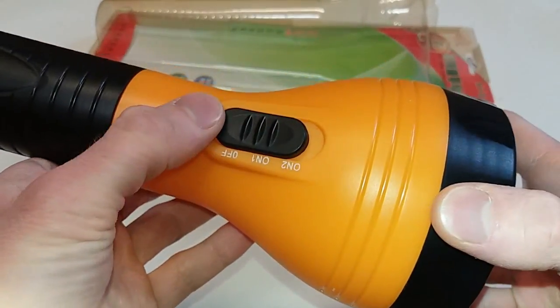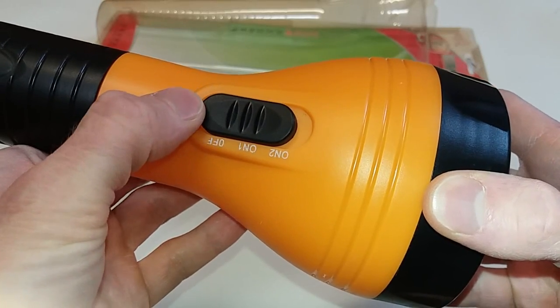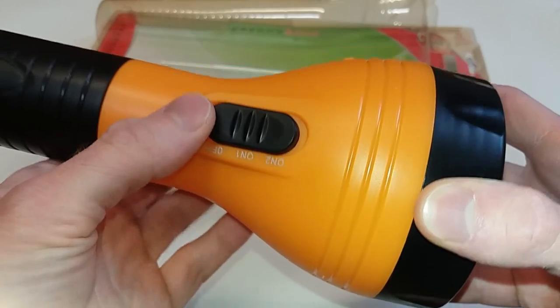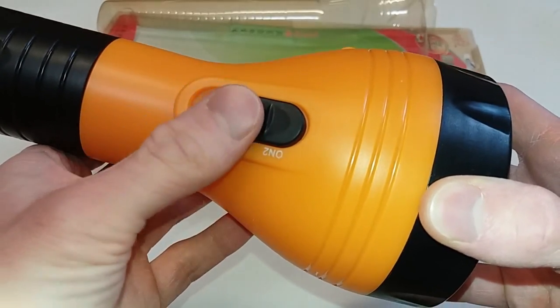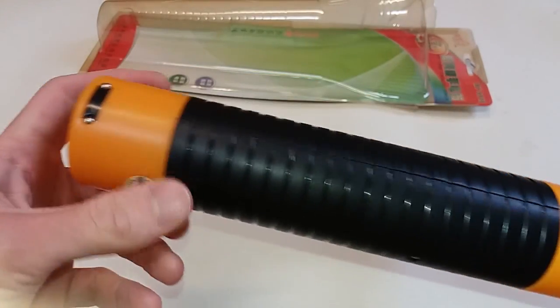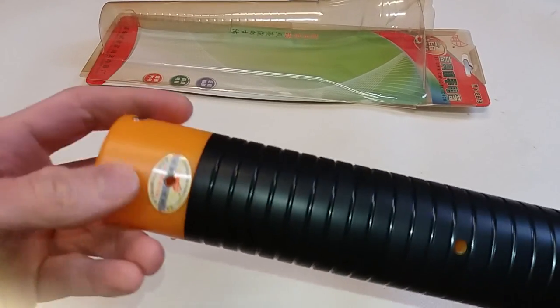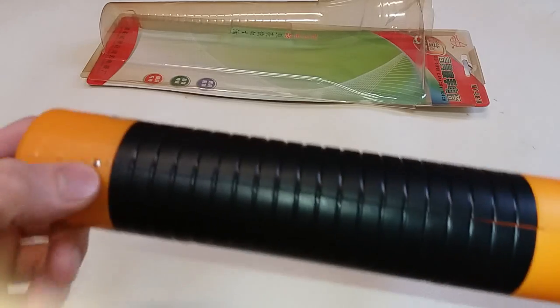Here we have a switch with three positions - off, on one, on two. It seems like low brightness and high brightness. There's a handle and some strange thing, I don't know what this is.